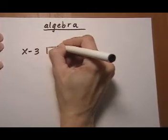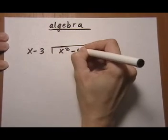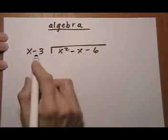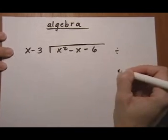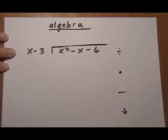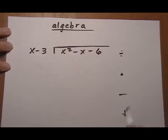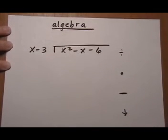So our first problem: x squared minus x minus 6 being divided by x minus 3. And we're going to divide, multiply, subtract, and bring down. When I do these out, I find it very helpful to have this column written down on the side that has the process steps.